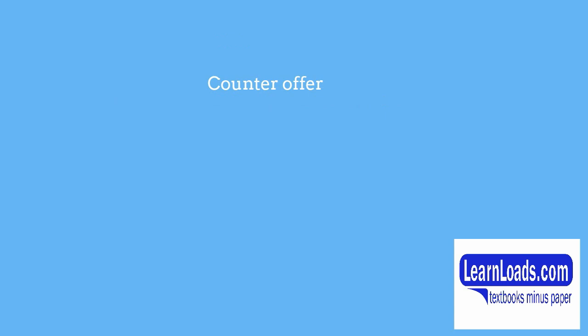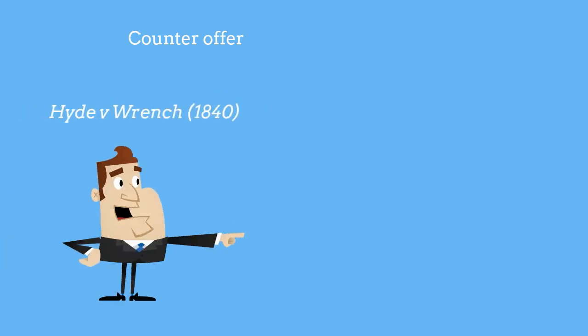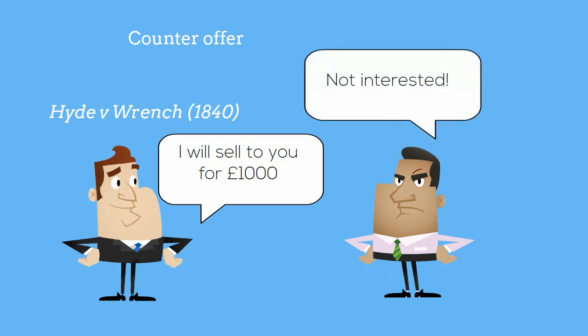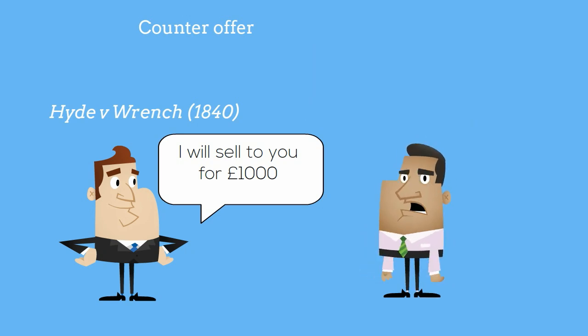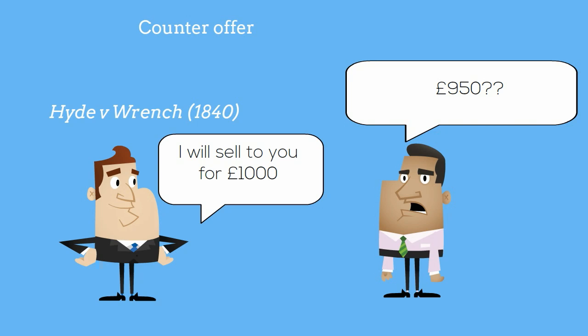Something else that can terminate an offer is a counter-offer. A counter-offer destroys the original offer — for an acceptance you have to have the offer in its entirety being accepted; anything else must be seen as a rejection of the offer or a counter-offer, making the original offeree become the offeror. In Hyde v Wrench, a farm was offered for sale by A to B at a price of one thousand pounds; B the offeree said 'how about nine hundred and fifty pounds?' A refused that offer. The offeree then tried to accept the original offer of one thousand pounds, but the court held that the original offer had been destroyed by the counter-offer of nine hundred and fifty.